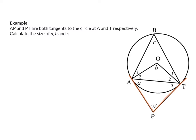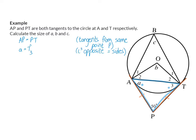We start by using our new theorem: AP has the same length as PT. Focusing on triangle ATP, that makes it an isosceles triangle, meaning angle small a and angle T3 are the same size. So AP equals PT — tangents from the same point P — and therefore angle a equals angle T3, as they are angles opposite equal sides.